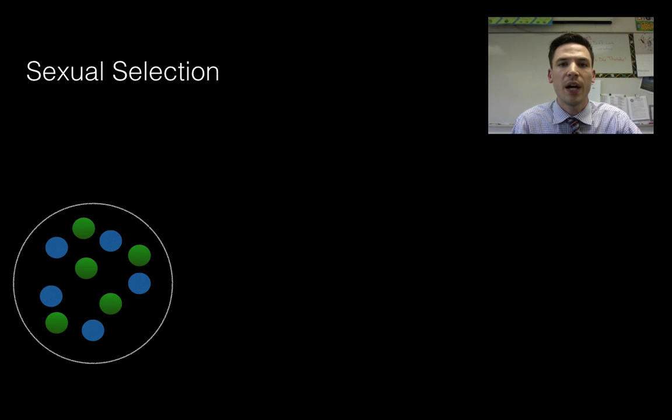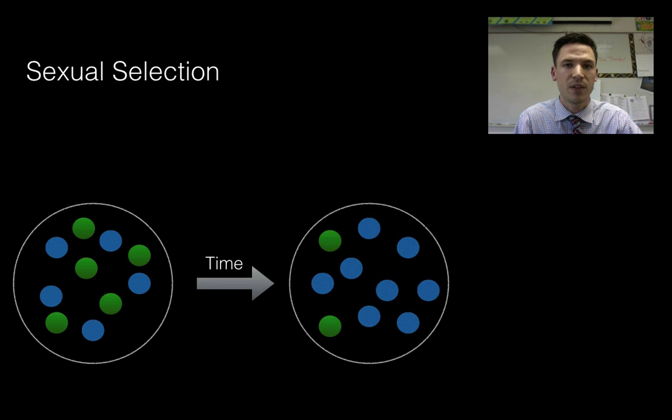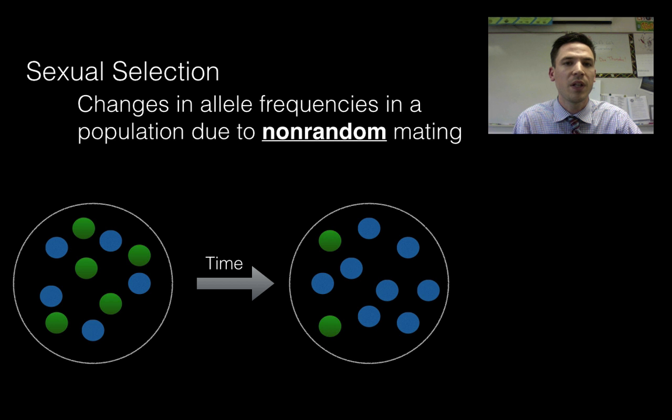One last way we can get evolution to occur is through something known as sexual selection or sometimes referred to as non-random mating. Let's again go to my beetle population or insect population here and say we have equal amounts of green and equal amounts of blue. What might happen in this population is that for some reason, individuals start choosing blue ones as mates. They only want to reproduce with the blue ones. So over the course of time, we have a change in allele frequency. There are more blues than greens. But it's not because the blues are more adapted. It's just for some reason that trait is being selected for in reproduction.